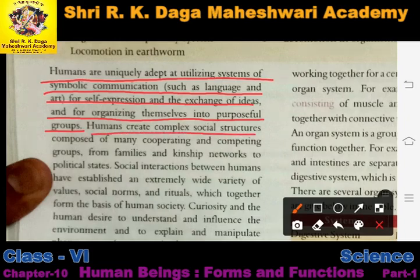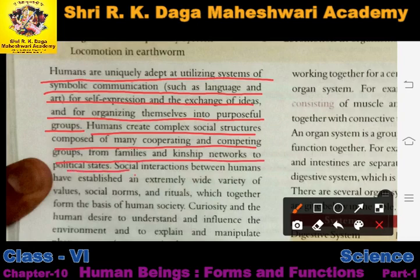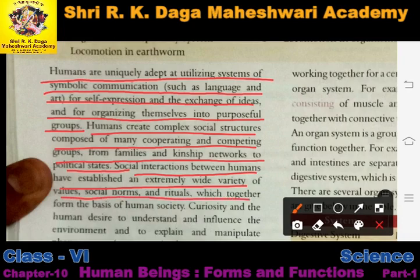Humans create complex social structures composed of many cooperating and competing groups, from families and kinship networks to political states. We have created a society where we are cooperating, competing and living together. Social interactions between humans have established an extremely wide variety of values, social norms and rituals, which together form the basis of human society.